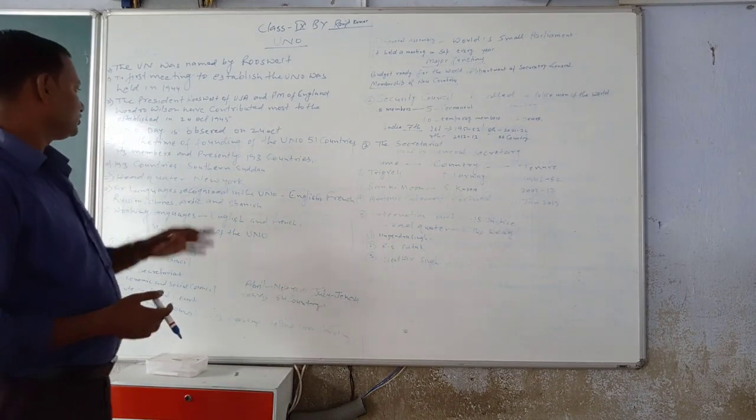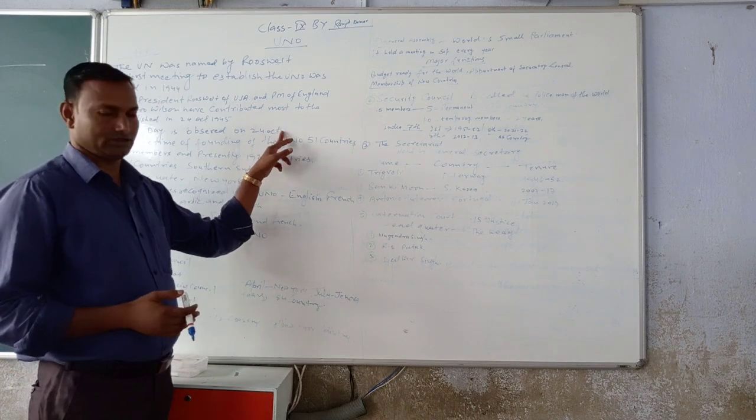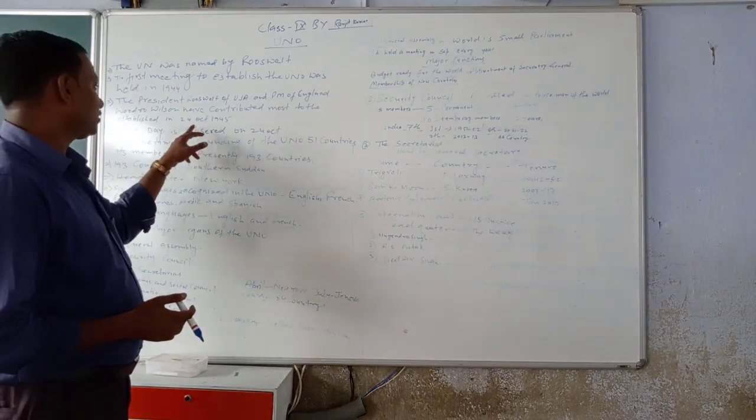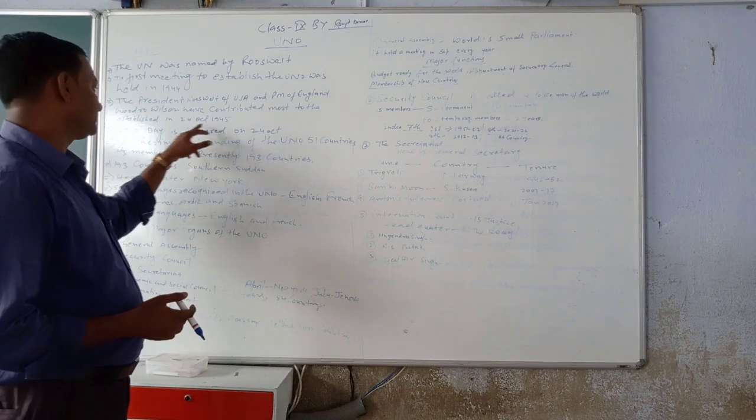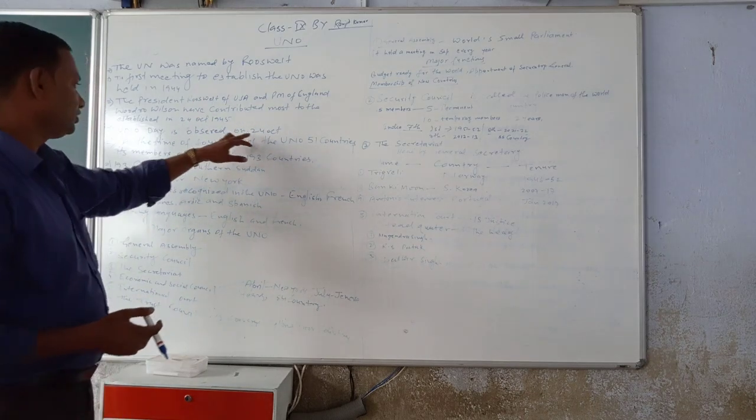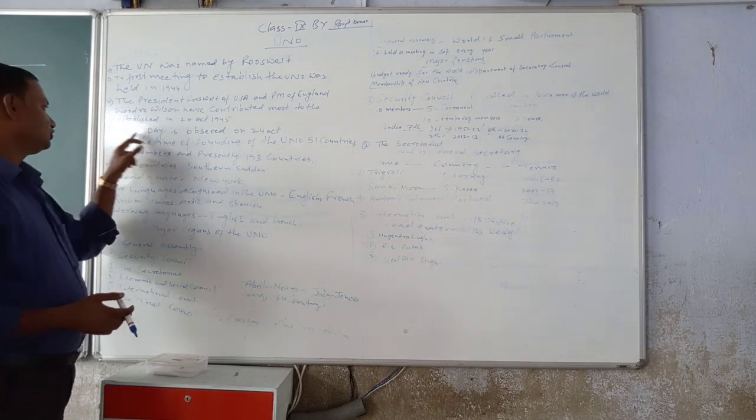And UNO, jo hum log celebrate karte hai, every year 24 October. Why? Because 24 October 1945, established the United Nation. So, 24 October, celebrated as UNO day.